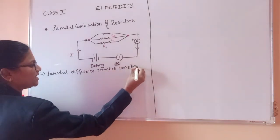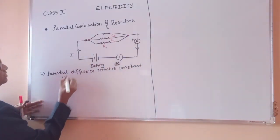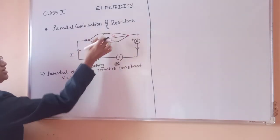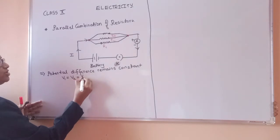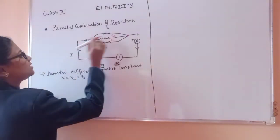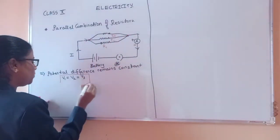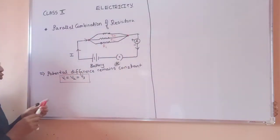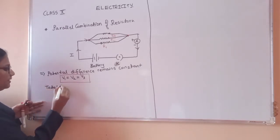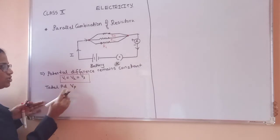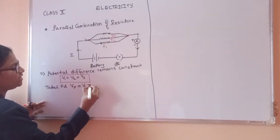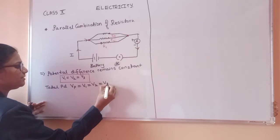So here we can say V1, that is the potential difference across R1, is equal to V2, the potential difference across R2, and V3, the potential difference across R3, are all equal. The potential difference occurs only at the two main points. So the total potential difference Vp equals V1 equals V2 equals V3.